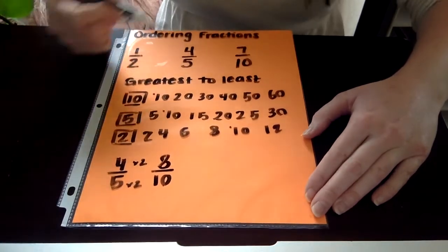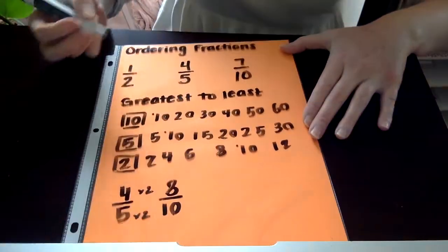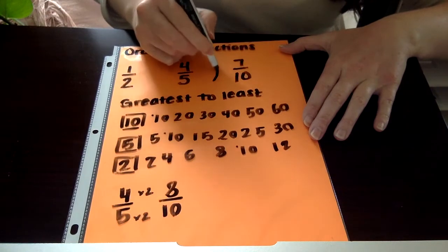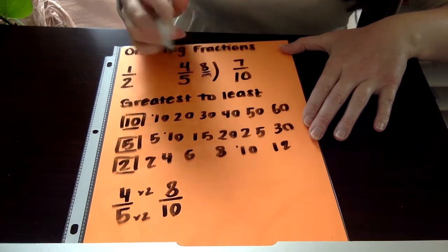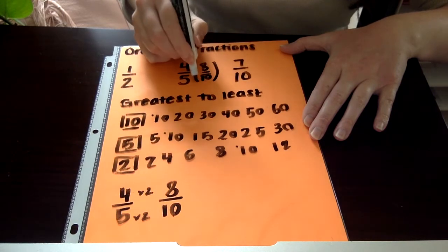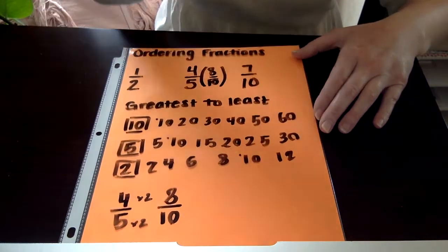That means that my equivalent fraction for 4 fifths is 8 tenths. So I'm actually going to write that out to the side, but I'm going to put it in parentheses so that I know that this is my converted fraction and not my original because I'm going to need to know my original.